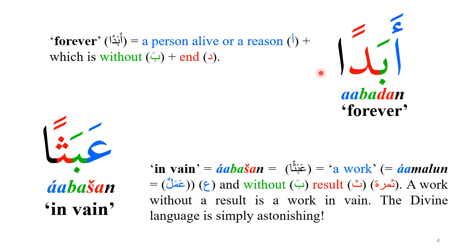Applying this logic, many words make perfect sense. 'Abadan' means forever: alif means a person, ba means without end — so forever is defined as a person without any end. 'Abasan' means in vain: ain means amal (work), ba means without, and sin means thamar (fruit/result) — work without a result. In modern standard Arabic you'd say 'amal bela thamar,' but actually 'ba' alone is enough, so 'abasan' is sufficient to convey the meaning of 'in vain.'